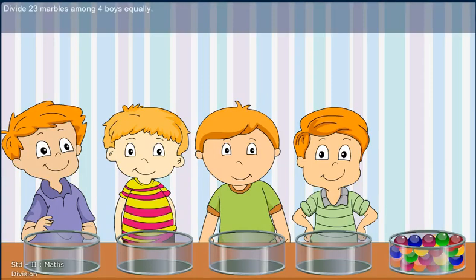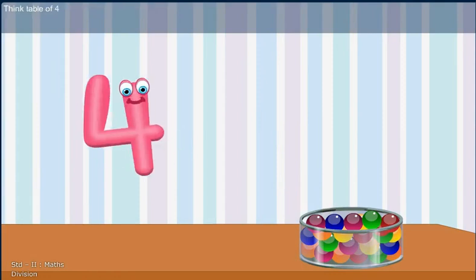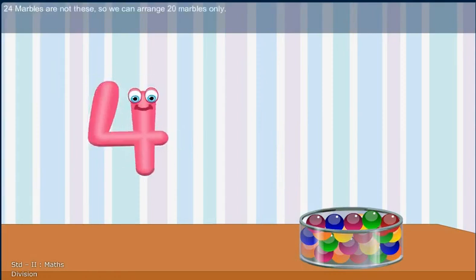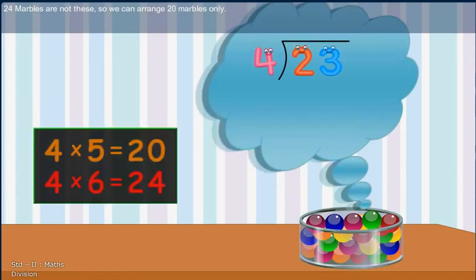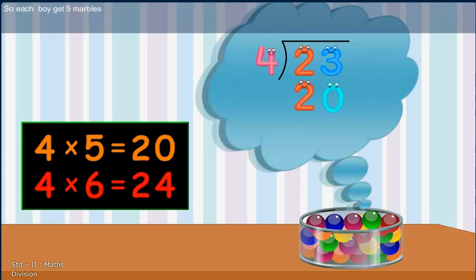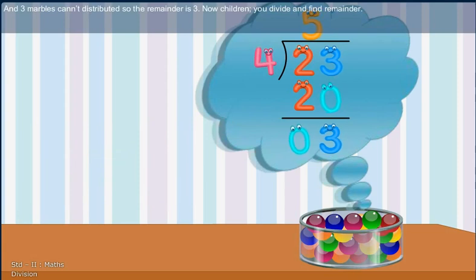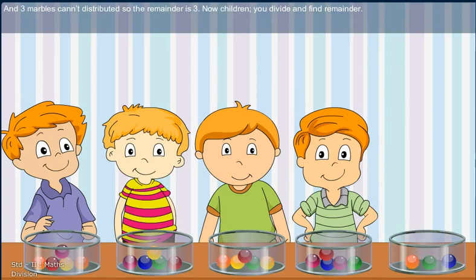Divide 23 marbles among 4 boys equally. Think table of 4. 24 marbles are not these. So we can arrange 20 marbles only. So each boy get 5 marbles. And 3 marbles can't distribute it. So the remainder is 3. Now children, you divide and find remainder.